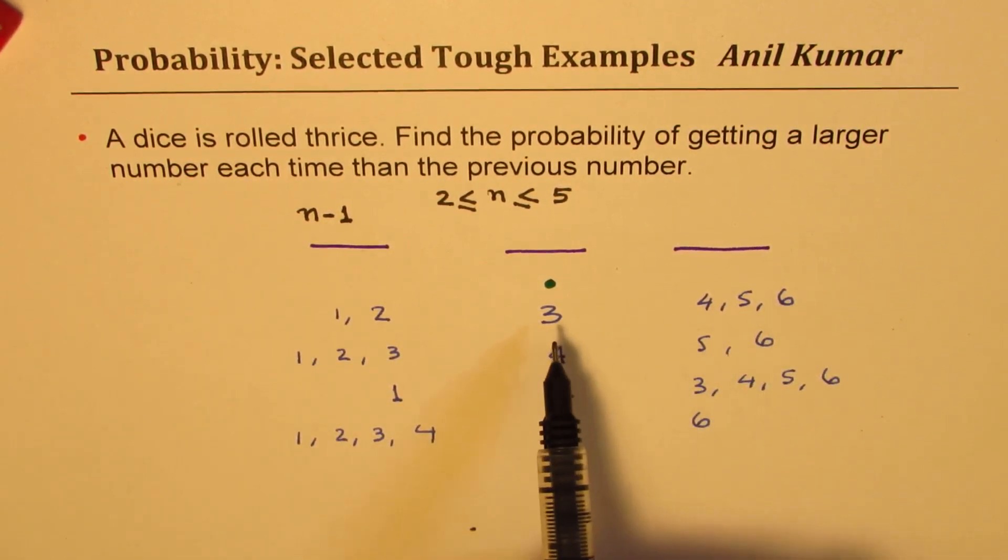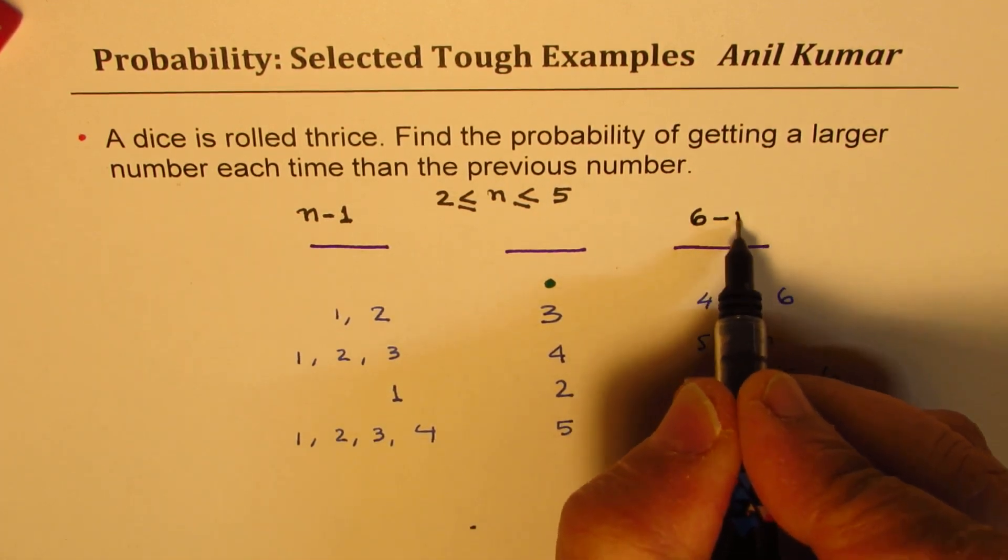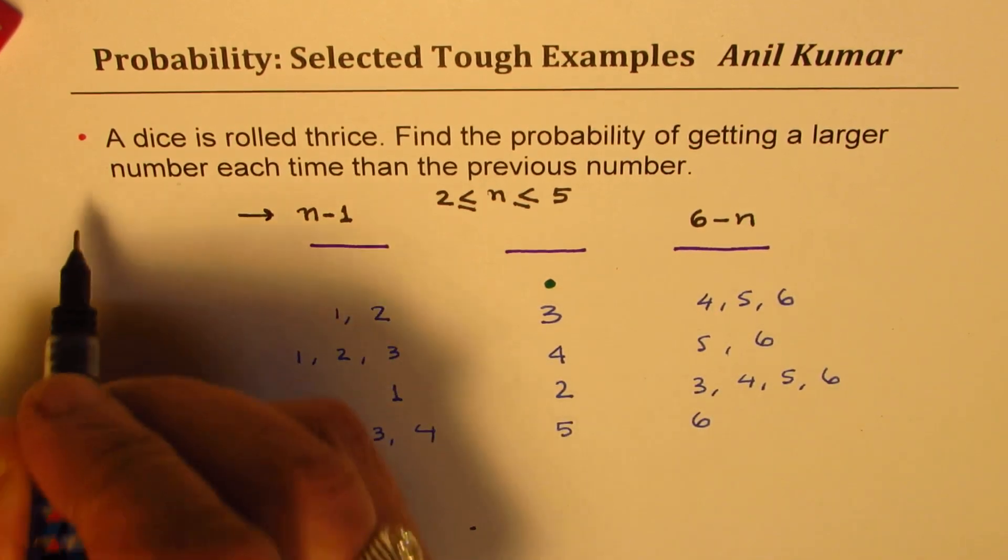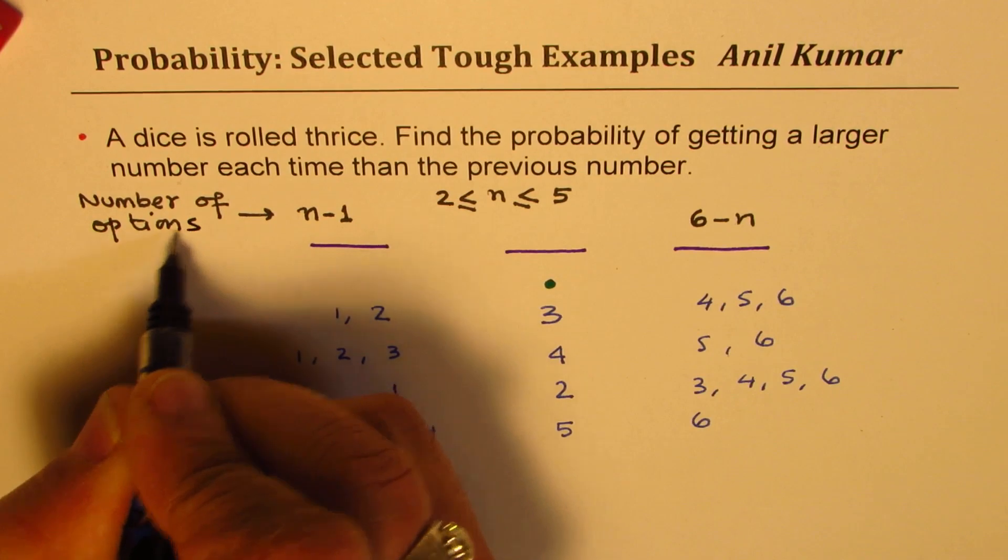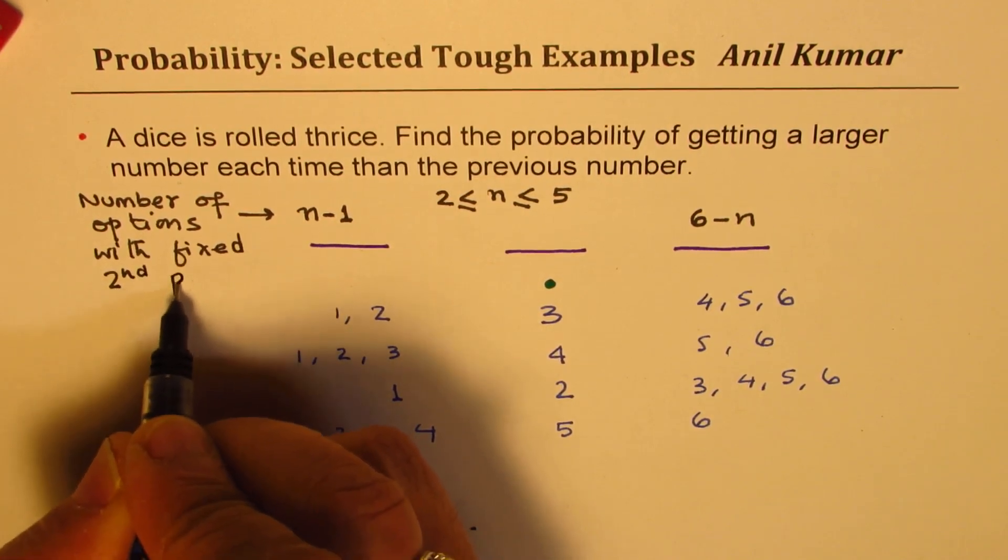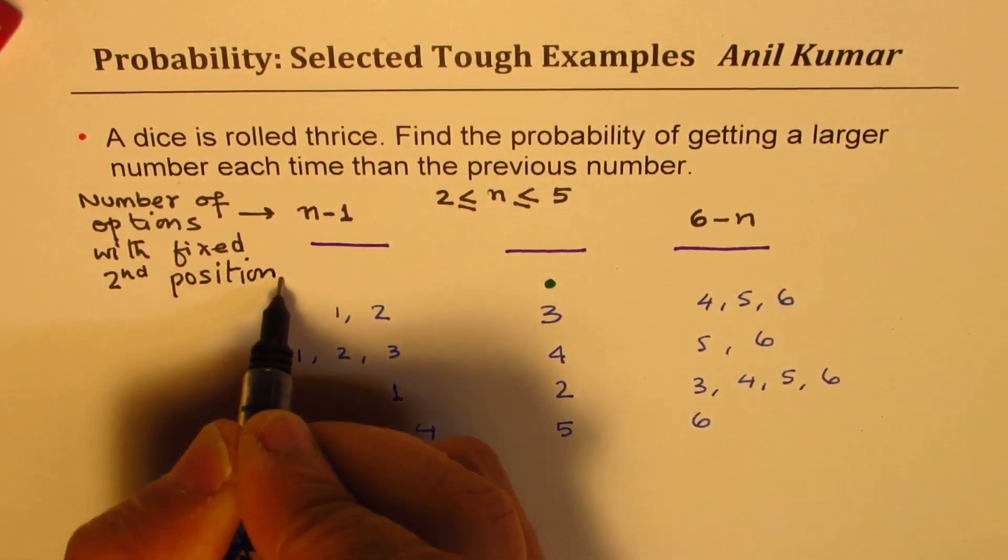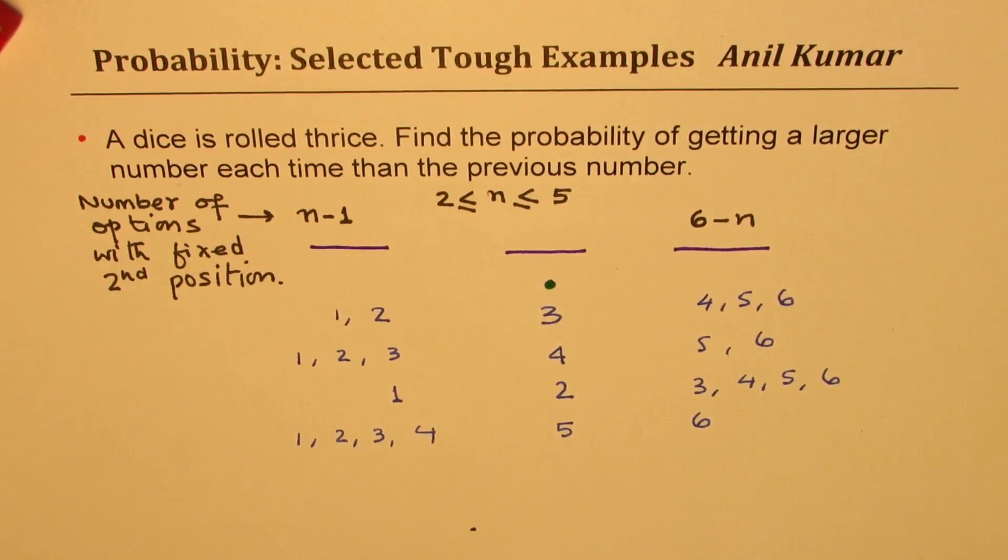Do you see that part? So n minus one options are there for the first position. On this side, with three, we have three options. With four, we have two. With two, we have four. With five, we have only one option. So that means the number of options here is six minus n. So what are these for us? These are number of options with fixed second position. You get an idea. So that gives you a way to solve this particular question, right? So what we could do is we could add all of these possibilities and get our answer. So that is the approach which we can actually follow in getting the answer.